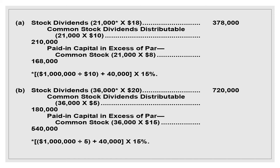In case (a): Stock Dividends is debited by 21,000 shares × $18 = $378,000. The 21,000 shares equals (1,000,000 ÷ $10 par value) plus the additional 40,000 shares, multiplied by 15%. Common Stock Dividends Distributable is credited at 21,000 shares × $10 par = $210,000, and the difference — Paid-in Capital in Excess of Par — is credited $168,000.